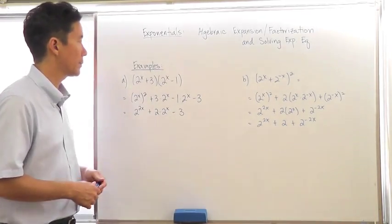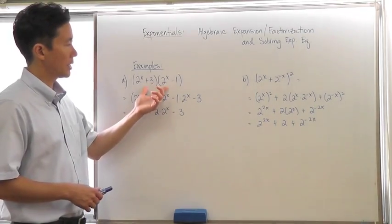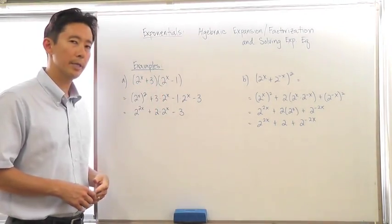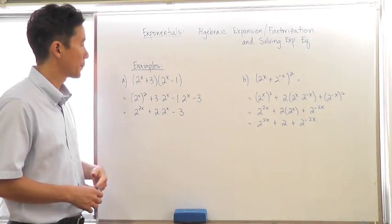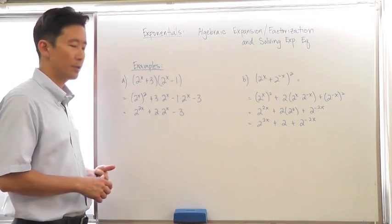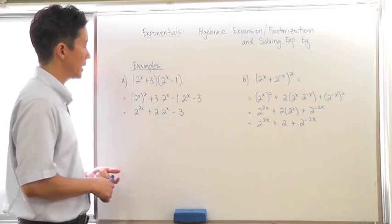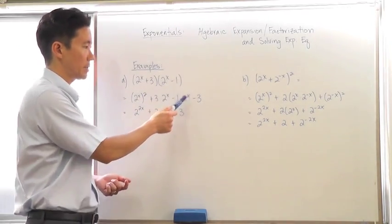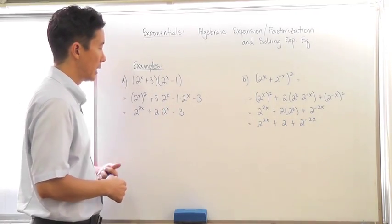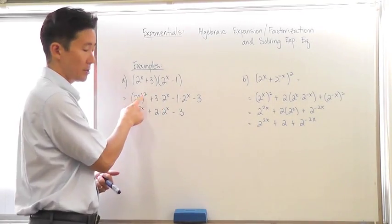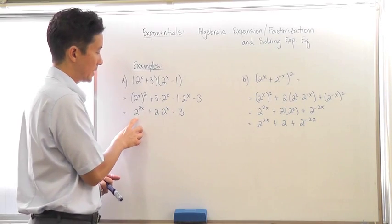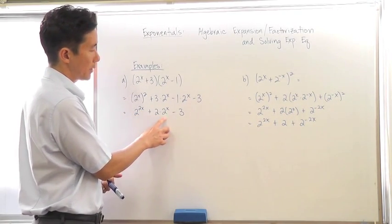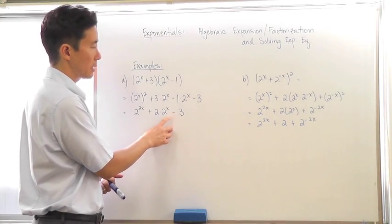Let's take a look at an example here — two binomials that are going to be multiplied together with exponentials in them. If we go ahead and distribute using the FOIL method, we basically have 2 to the x squared plus 3 times 2 to the x minus 1 times 2 to the x minus 3. After that, we can simplify using our rules of exponents, giving us 2 to the 2x plus 2 times 2 to the x, minus 3.